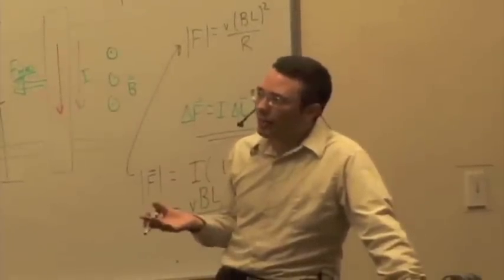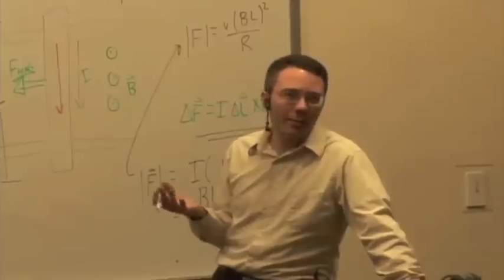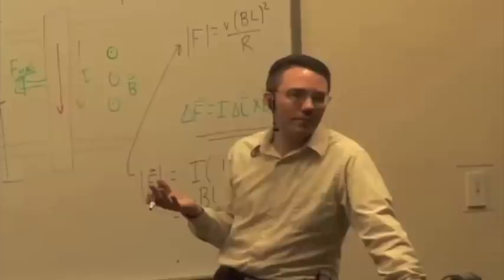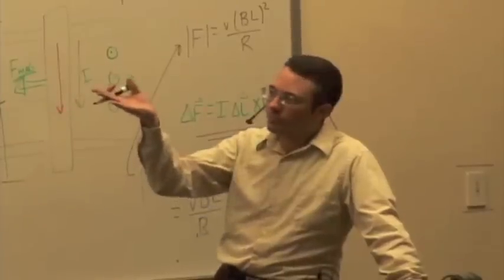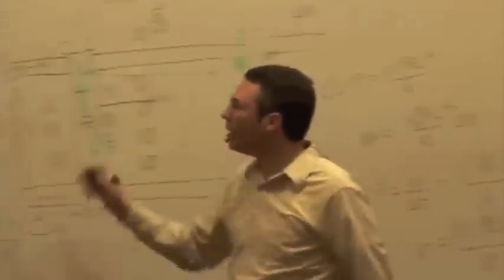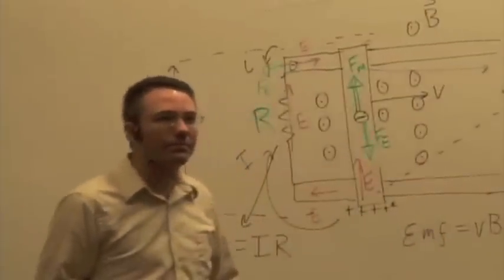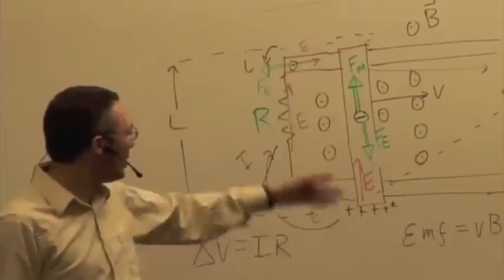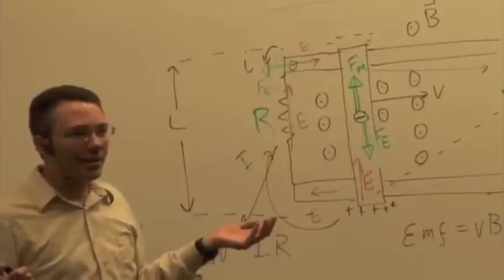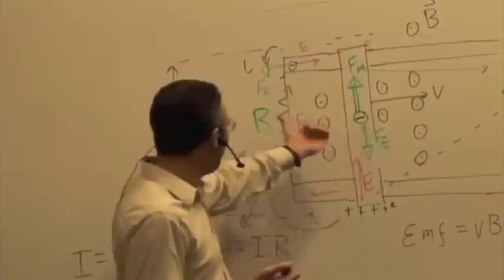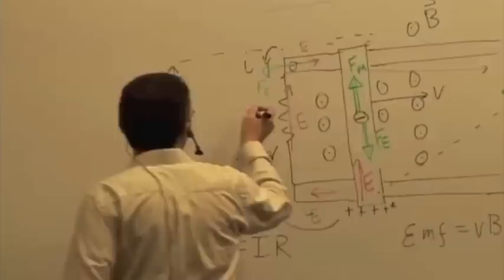If we're in a steady state, what do I know about the amount of power I'm inputting? It's constant. Where's the energy going again? Resistor, right? The resistor is dissipating the energy. So what do I know about the power output of the resistor? It's constant. And it's got to be equal, right? It's got to be equal to the power input. In the steady state, there's nothing changing. So the amount of energy I'm pumping in has got to be equal to the energy flowing out. Well, let's see if that's true.